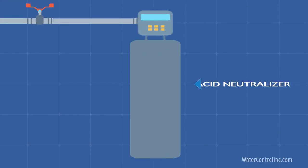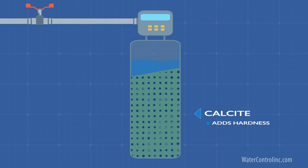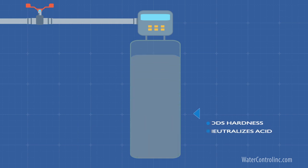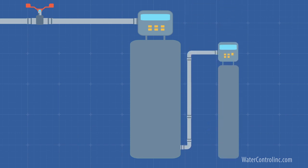Acidic water is relatively easy to deal with. Typically, the water is run through a filter that looks like a water softener, but without any salt tank. The media in that tank is calcite — basically, it's limestone. It adds a small amount of hardness to the solution, to the tune of about four to six grains, and it neutralizes the acid in the process. If this low-level hardness is problematic for your application, a water softener can be installed downstream.